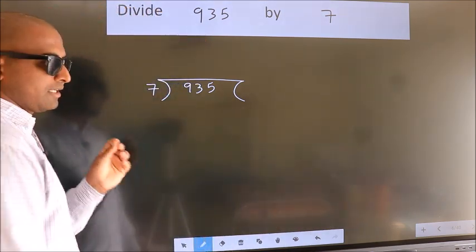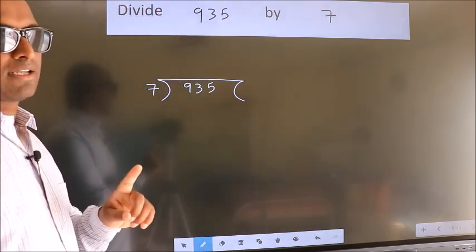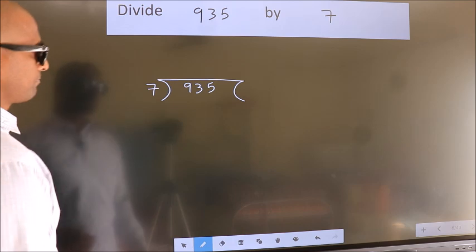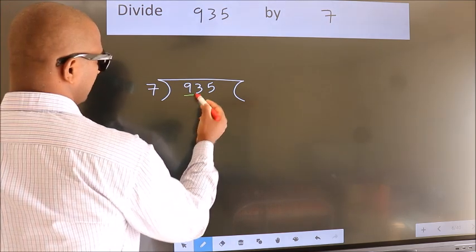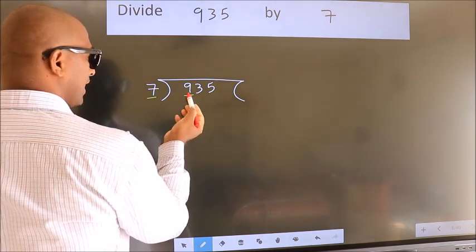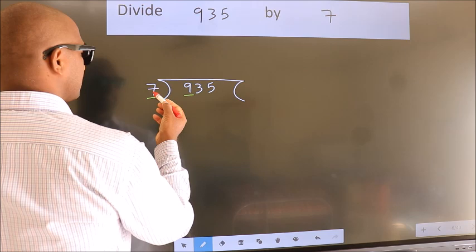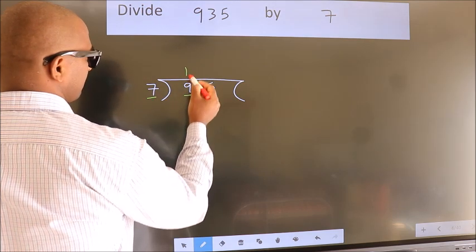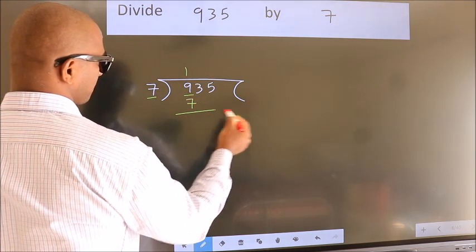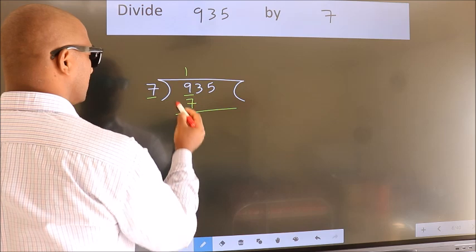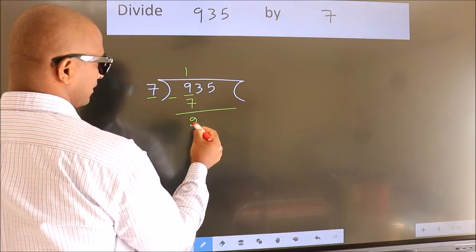This is your step 1. Next, here we have 9, here 7. A number close to 9 in 7 table is 7×1=7. Now we should subtract. We get 2.